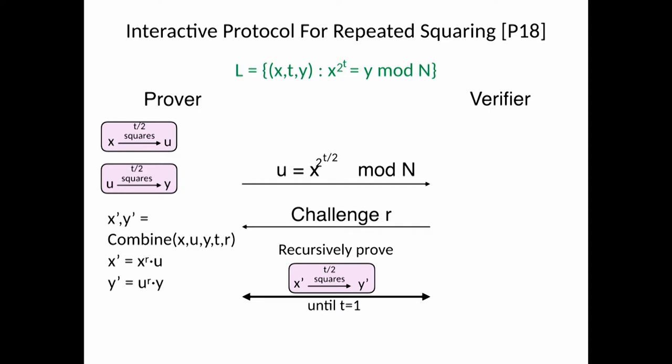And Pietrzak applies Fiat-Shamir and gets the non-interactive protocol. So let's see how the non-interactive protocol looks like. So this is what the prover does from the point of view of the prover.